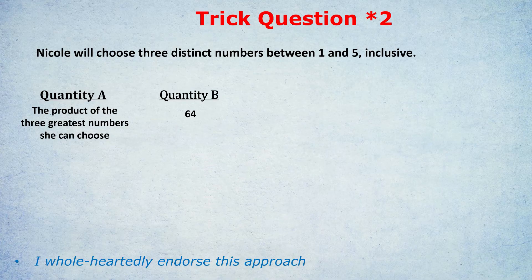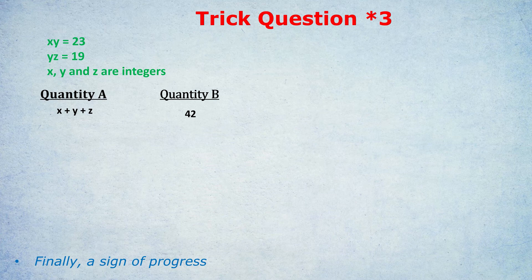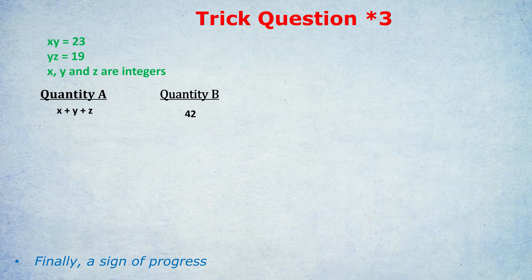Here is the final question, the final trick question. xy equals 23, and yz equals 19. x, y, and z are integers. Quantity A: x plus y plus z, the sum. Quantity B: 42.